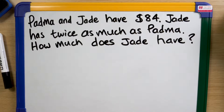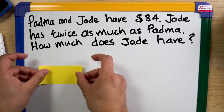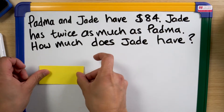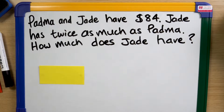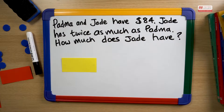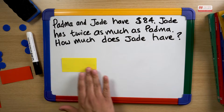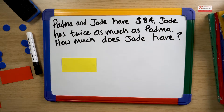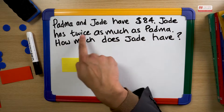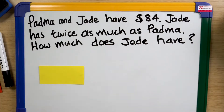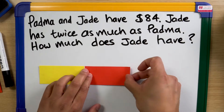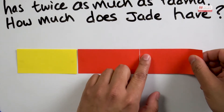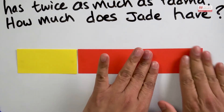It says Jade has twice as much as Padma. So if Padma has this amount of money, how much would Jade have? We're representing Padma with one bar. How do I represent Jade? It says Jade has twice as much as Padma. So now we have two bars for Jade and one bar for Padma.